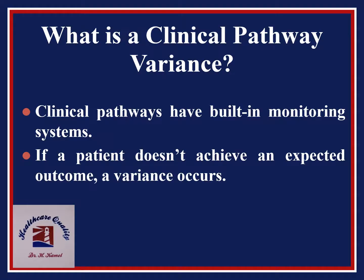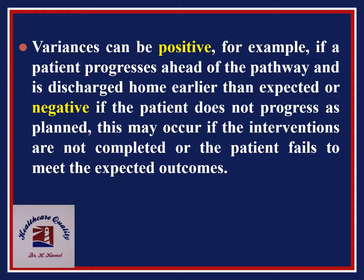We will now talk in detail about clinical path variance. Clinical pathways have built-in monitoring systems. If a patient doesn't achieve an expected outcome, a variance occurs. Variances can be positive — for example, if a patient progresses ahead of the pathway and is discharged home earlier than expected — or negative, if the patient does not progress as planned, which may occur if the interventions are not completed or the patient fails to meet the expected outcomes.